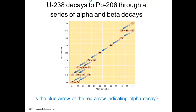This diagram shows uranium decaying all the way down to lead through many steps. First, uranium goes to thorium via alpha decay — the blue arrow — because alpha decay decreases the atomic number by two, from 92 to 90. Then it undergoes two subsequent beta decays shown by the red arrows, increasing the atomic number from 90 to 91 and then to 92. The blue arrows indicate alpha decay and the red arrows indicate beta decay. Pause the video to look at that figure more carefully.